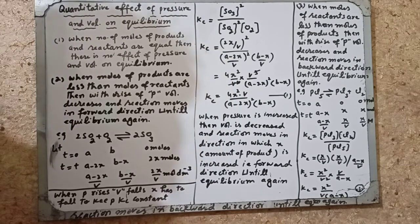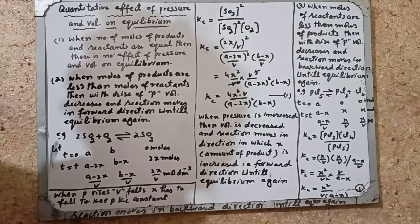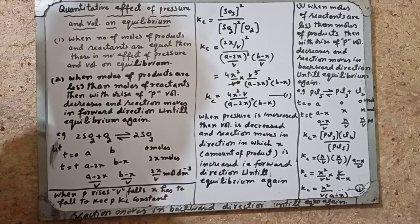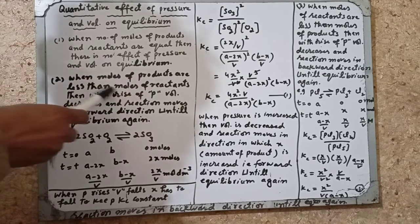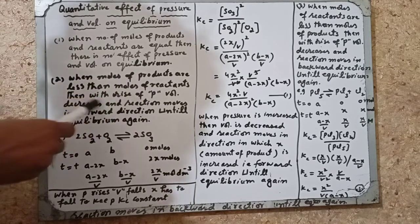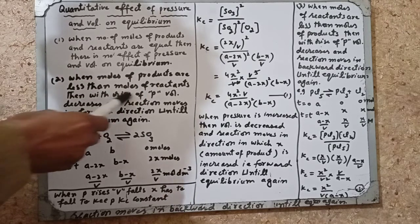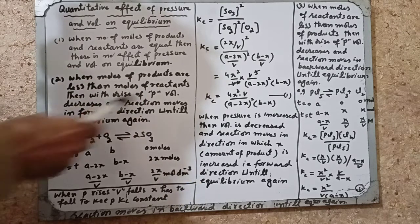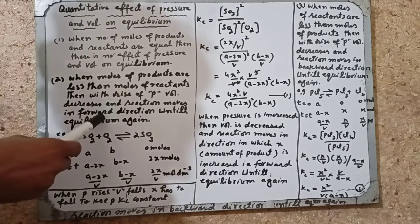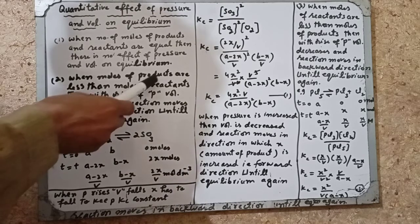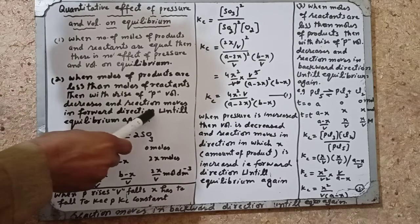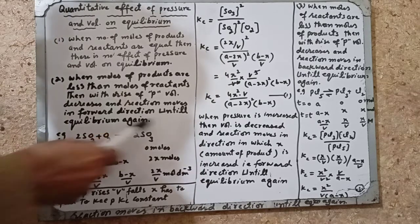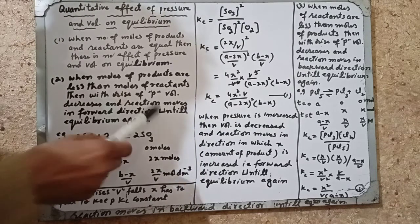When the number of moles of products and reactants are equal, then there is no effect of pressure and volume on the equilibrium. When moles of products are less than the moles of reactants, then with rise of pressure, volume decreases and reaction moves in the forward direction, because moles of products are less, until equilibrium is attained again.